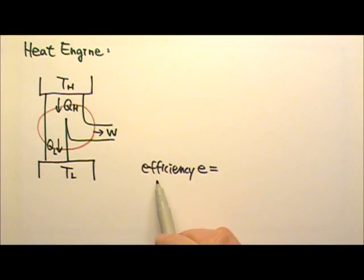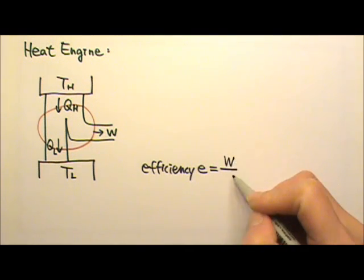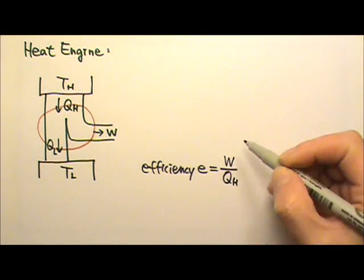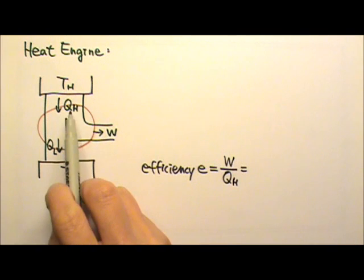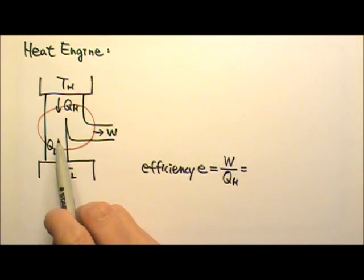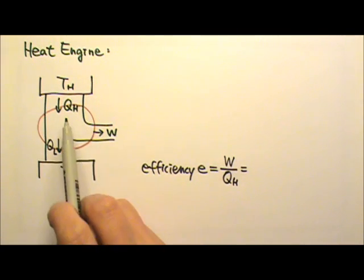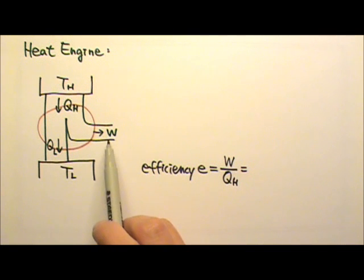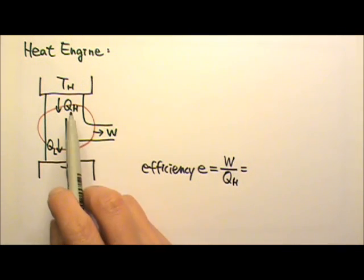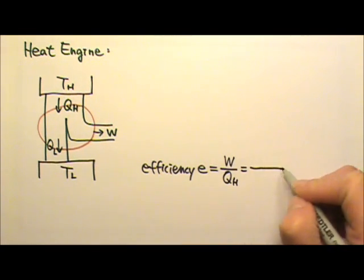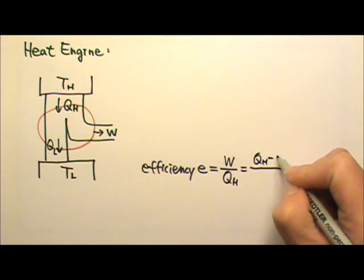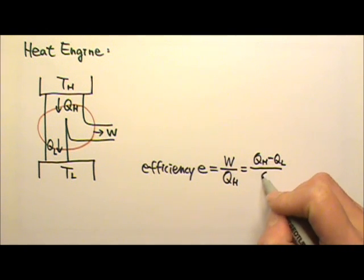The efficiency of a heat engine E is defined as W divided by QH. It's the work output divided by the energy input. Because energy is conserved, QH is split into QL and W, so QH equals QL plus W, which means W can be written as QH minus QL. So this is also QH minus QL divided by QH.